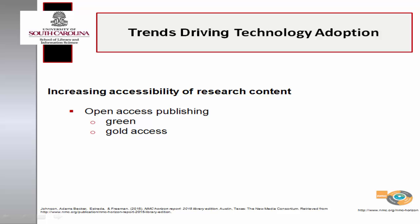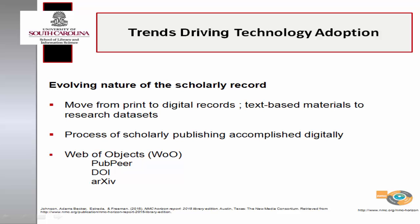There are two types of open access publishing. Green access is a process of self-archiving through the submission of content to a free repository. Gold access requires an article processing fee funded by subsidy support from a university or government body, or an author paying out of pocket. The evolution of the scholarly record is being driven by the move from the printed record to the digital and the shift from text-based materials to research data sets. The process of scholarly publishing is also being accomplished through digital means, what has been called a web of objects. Certification has been performed online using the open peer review platform PubPeer, articles published using a digital object identifier, and papers distributed through archive.